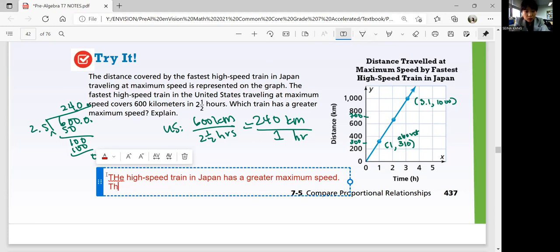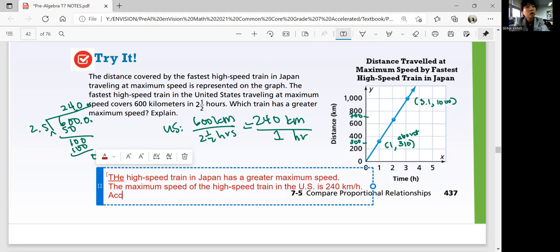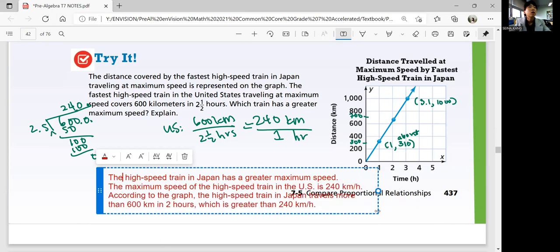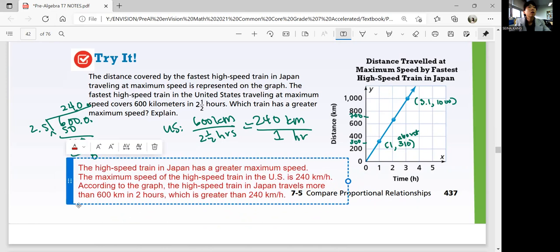Because the maximum speed of the high speed train in the US is 240 kilometers per hour. And so, according to the graph, the high speed train in Japan travels more than 600 kilometers in 2 hours, greater than 240 kilometers per hour.